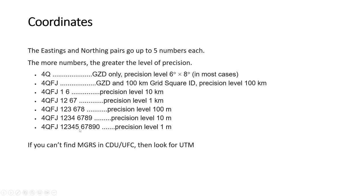The MGRS coordinate can be up to a five-digit pair — that is very precise. Normally you are looking at 6 or 8 numbers. If you can find one format or the other, you need to know how to switch between them.